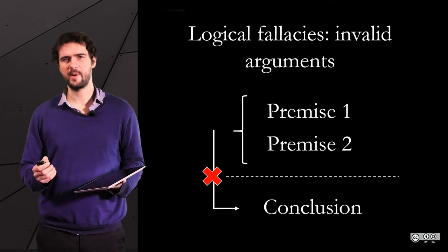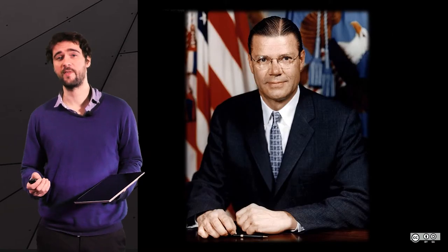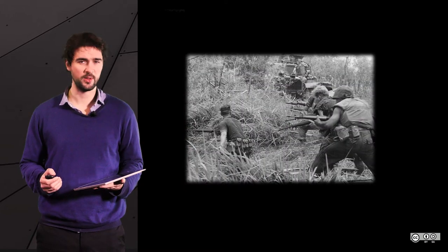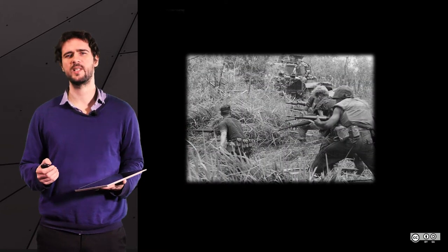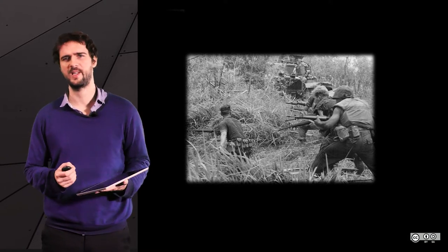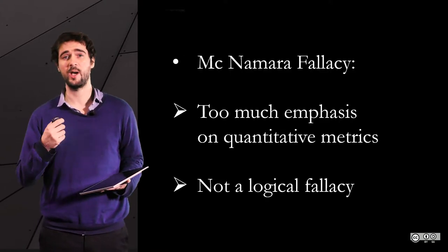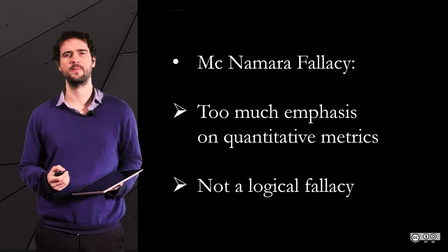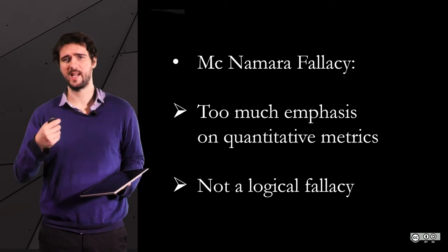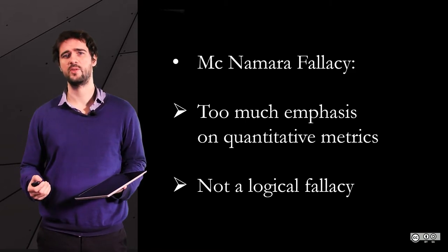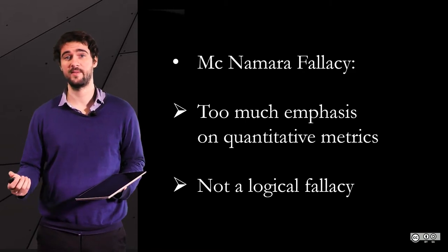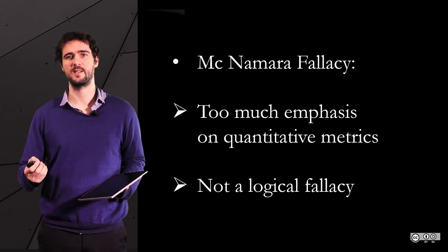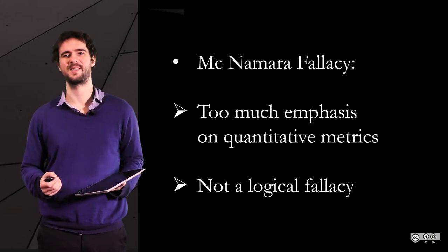For the record, McNamara was a US government official during the Vietnam war. He wrote reports on the evolution of the situation on the field, focusing on quantitative metrics such as the number of losses on both sides, to suggest that the United States were winning the war. We all know how it ended. This tendency to overemphasize quantitative data and to dismiss qualitative data is now referred to as the McNamara fallacy, but as you can see, not a logical fallacy.